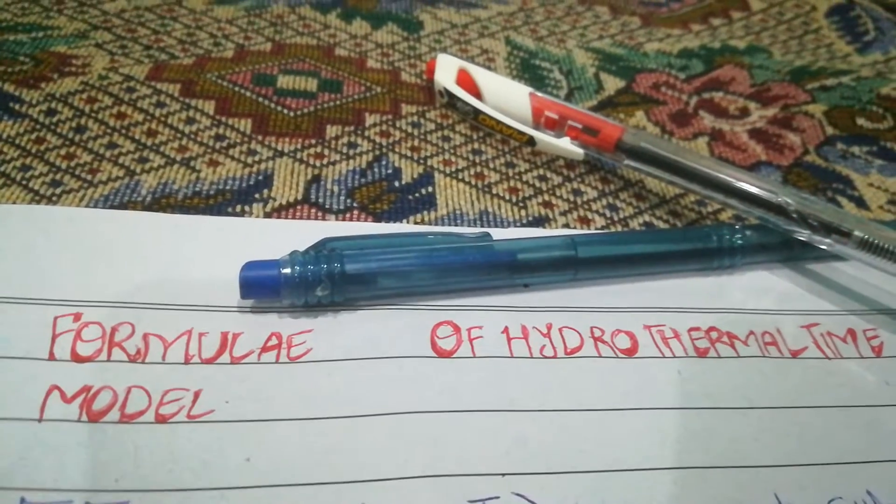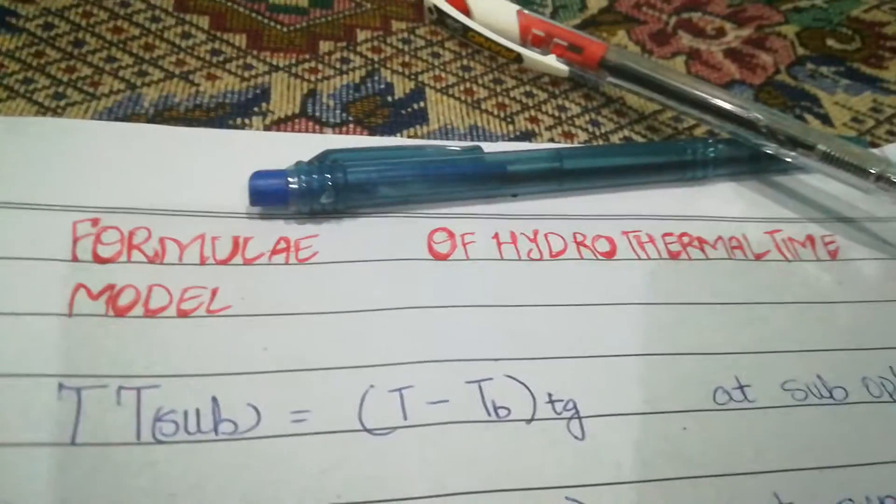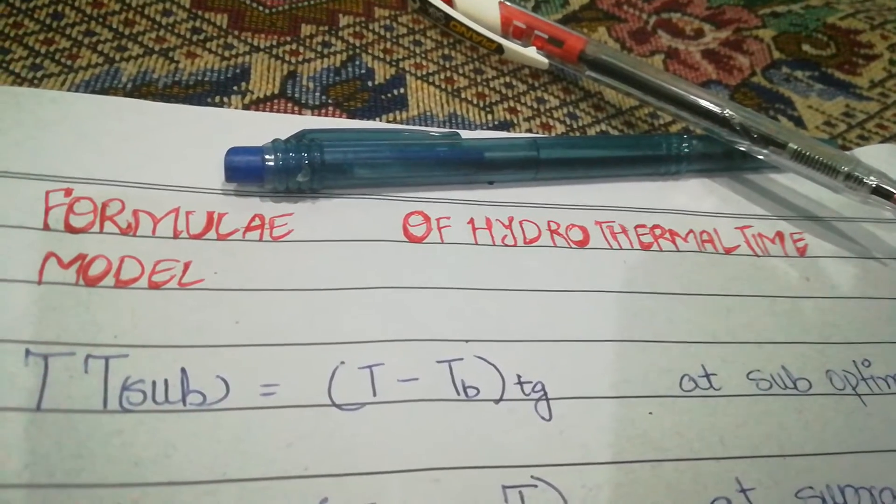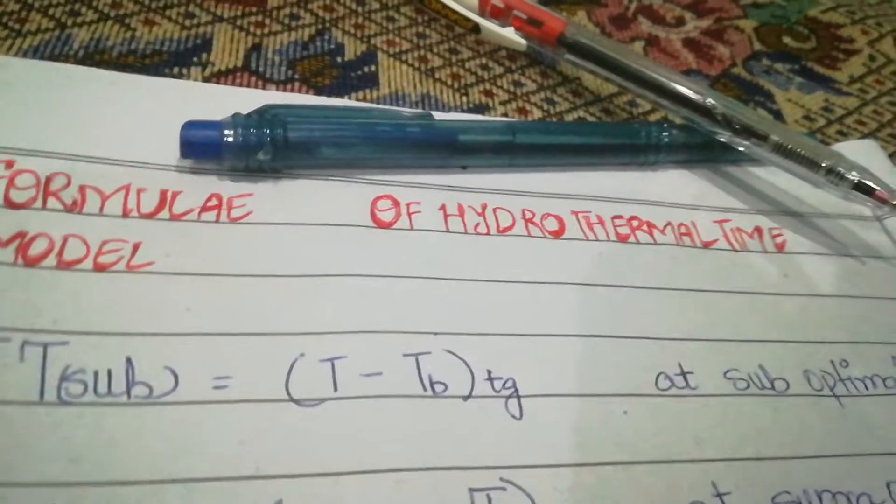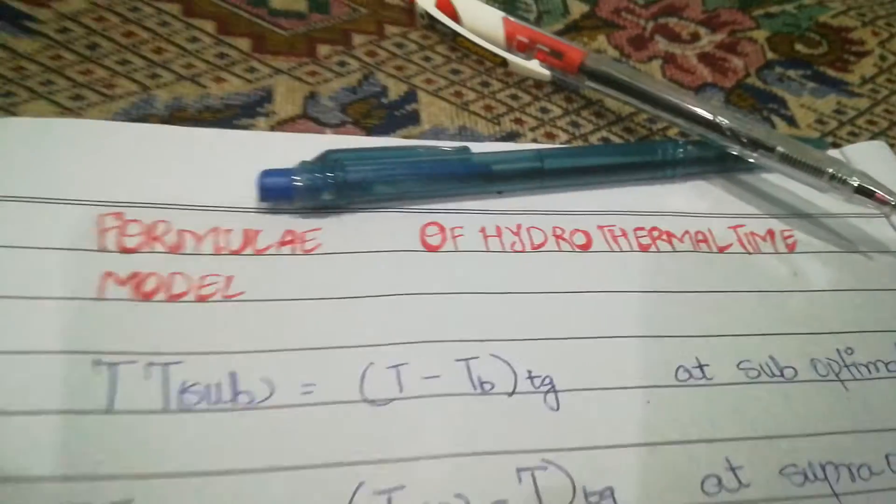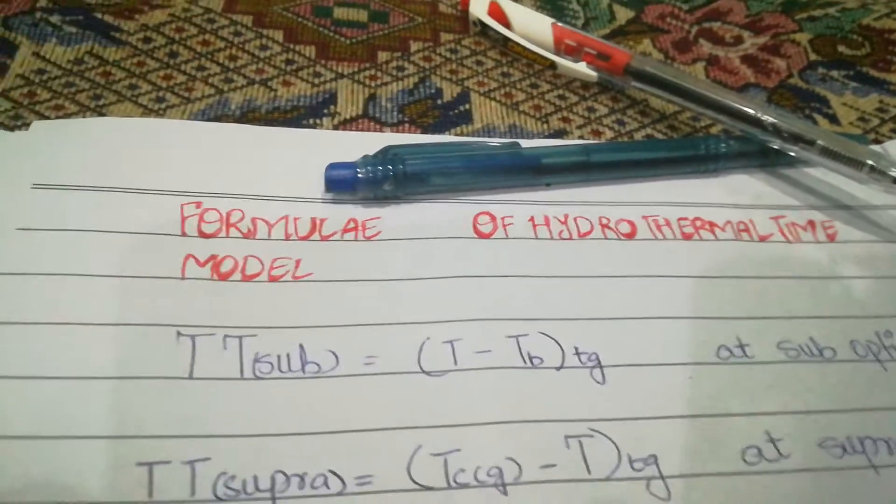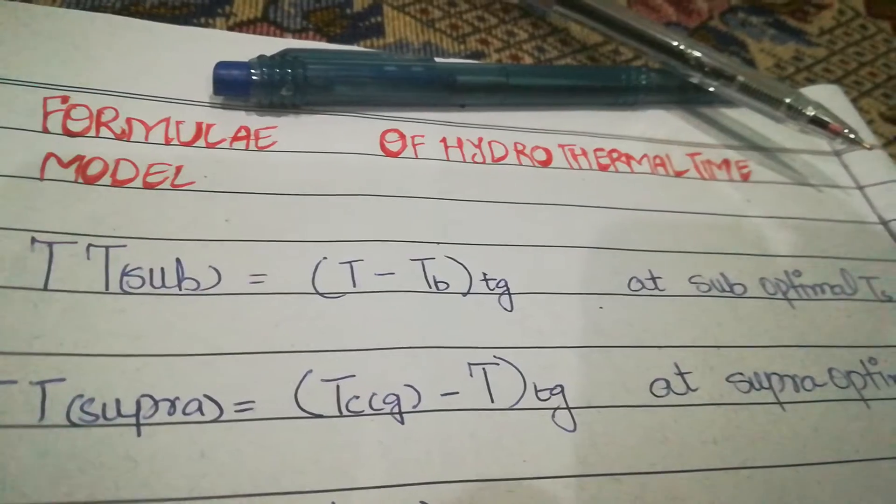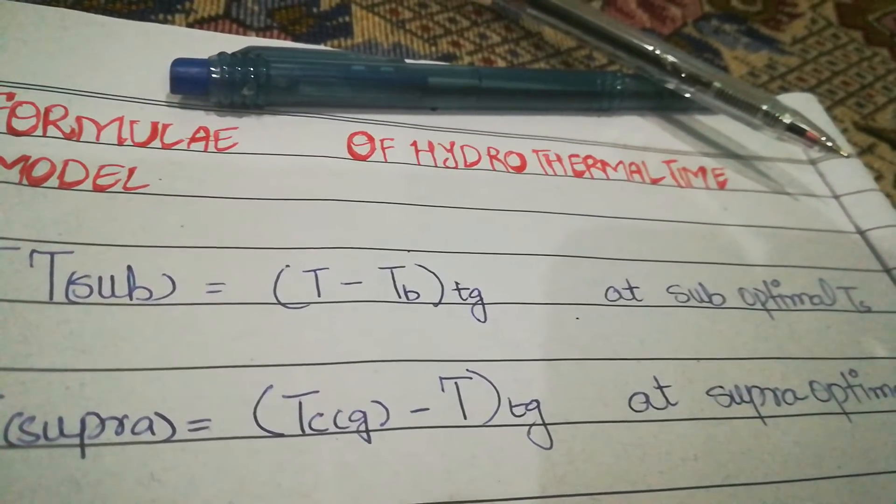hydro thermal time. Now let's start with the formulas. The first formula is TT(sub) = (T - Tb)tg at sub optimal Ts. Ts is the cardinal temperatures. TT is the thermal time. TT(supra) = (Tc - T)tg